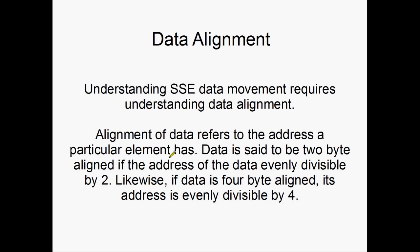Data is said to be 2-byte aligned if the address that the data is on is evenly divisible by 2, or is an even number in other words. Likewise, if the address data is on is 4-byte aligned, then it's evenly divisible by 4. You'll sometimes hear something like data must be on a 16-byte boundary, which means that the data must be aligned to 16 bytes.